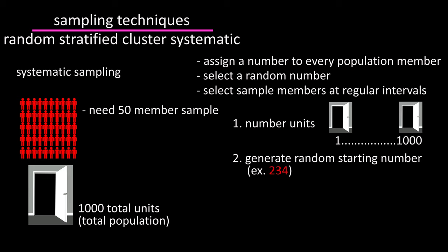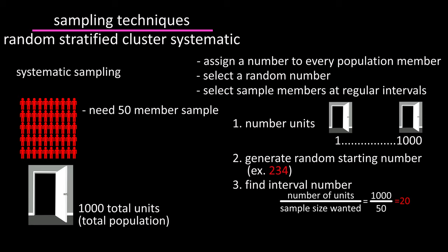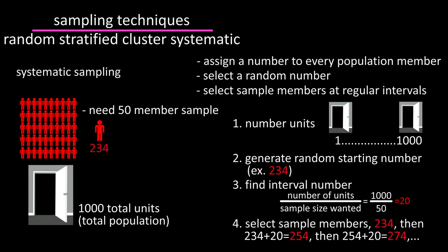Since you want a sample of 50, you could divide 1000, the number of the population, by 50 to get 20, which would be your interval number. So 234 would be selected for the sample, then 254, which is 234 plus 20, then 274, which is 254 plus 20, and so on until you had your 50 members selected for your sample.